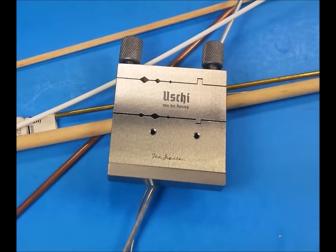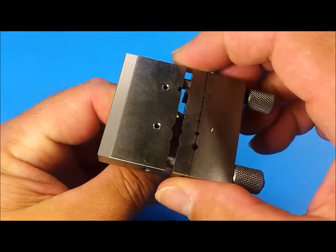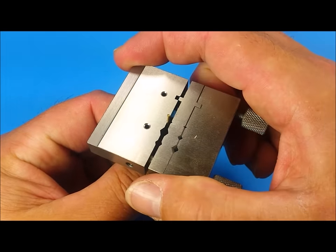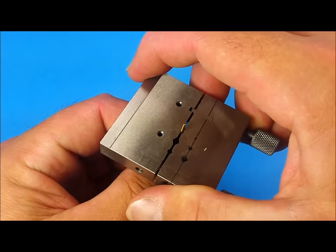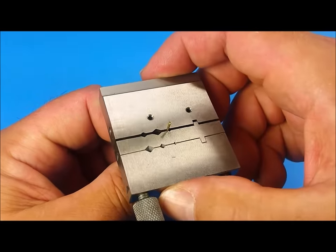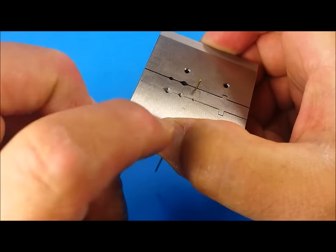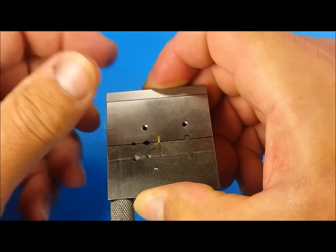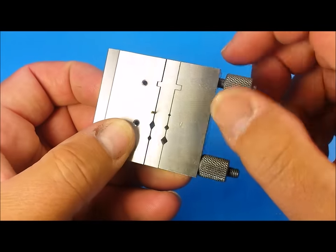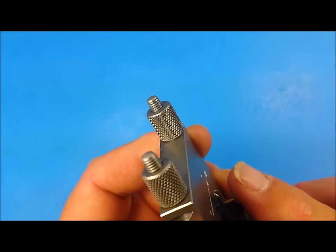This tool is extremely easy to use. Simply unscrew the thumb nuts allowing enough room to open the jaws enough to slide your stock in. For round stock, choose the correct size groove that will hold the piece securely. Place the material so it's slightly above the surface of the tool.